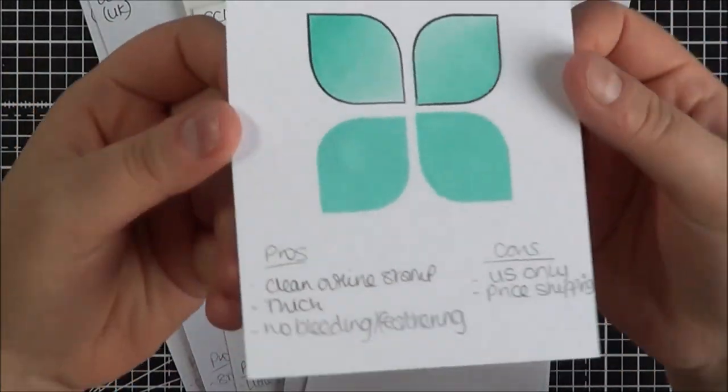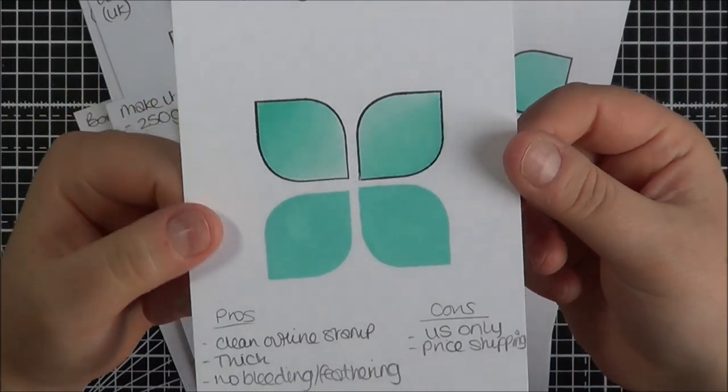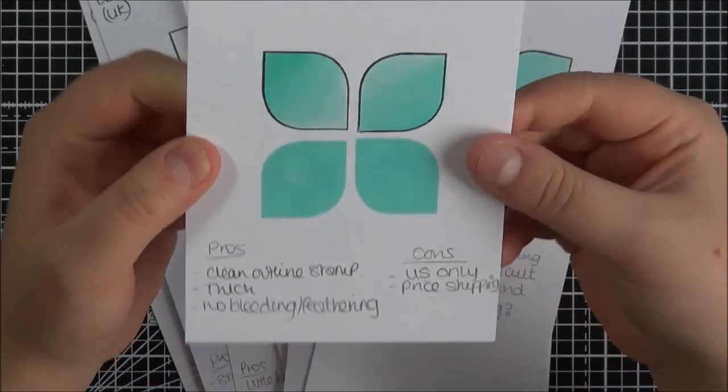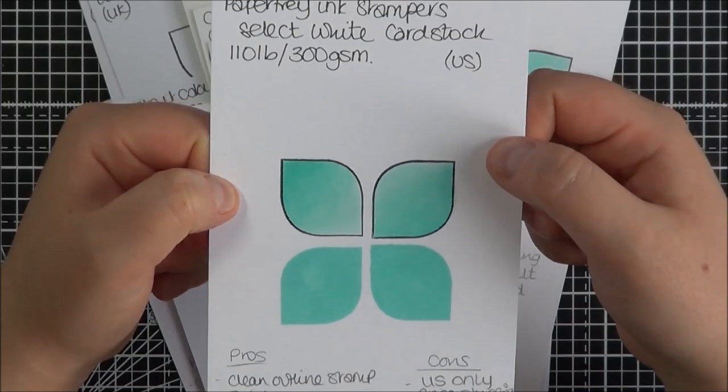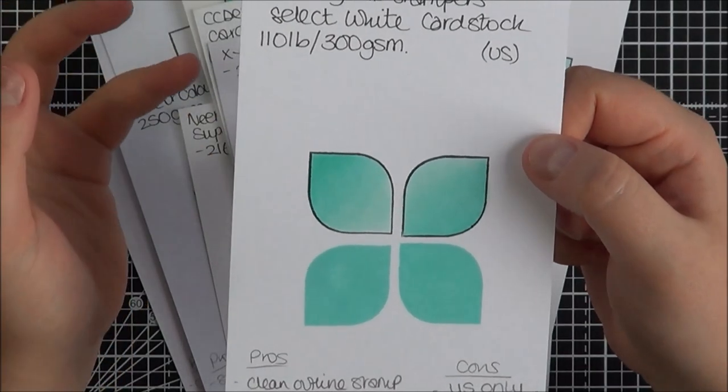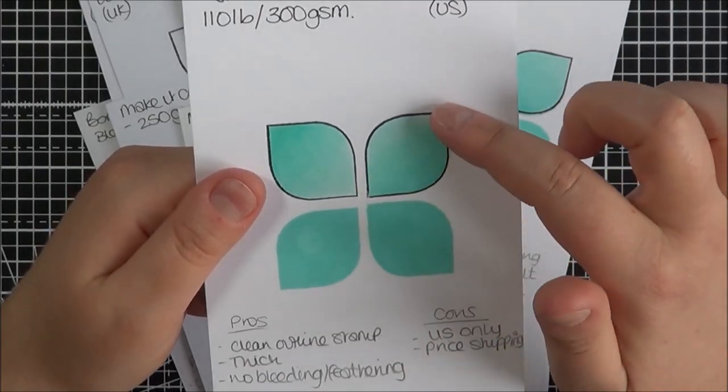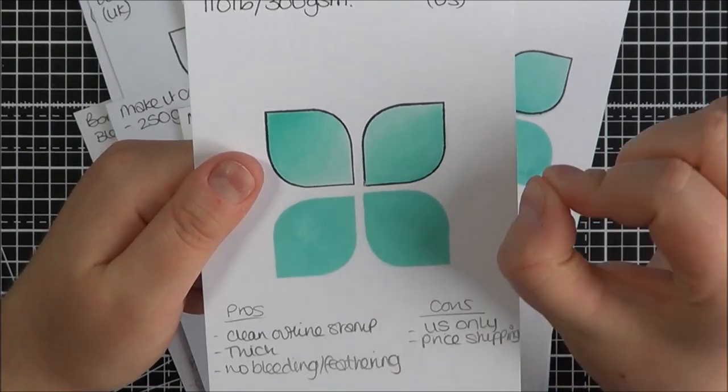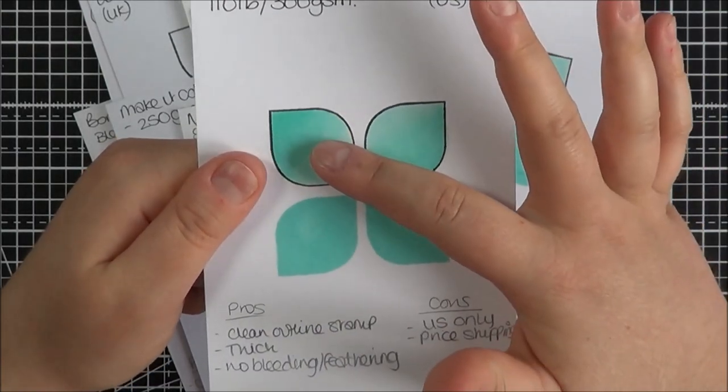First of all I'm just going to show you this Papertray Ink one. So I stamped it on, this is Hero Arts Ink. It's stamped fairly well. It's a very thick cardstock, it's 110 pound in weight which is around 300 gsm which is what we use in the UK. I do feel that it had nice blending with the Copic markers. Tiny bit of bleeding on this one but there was no bleeding on that one at all.